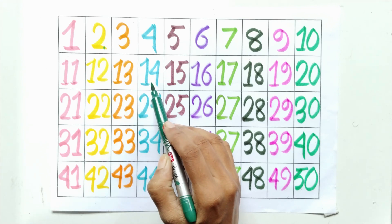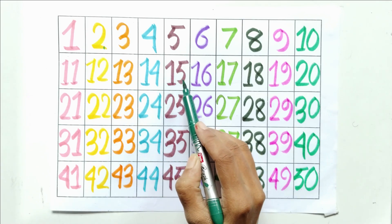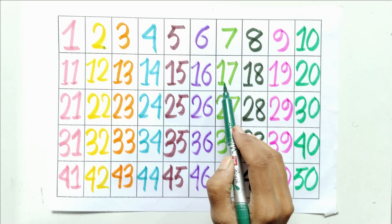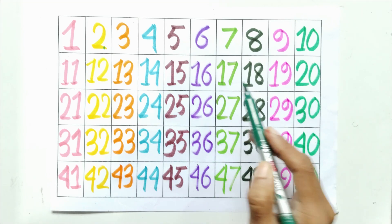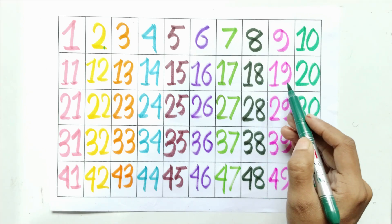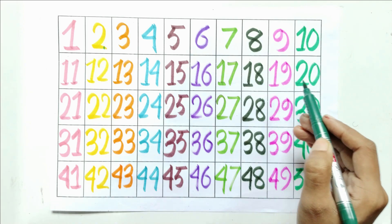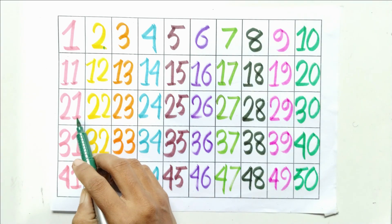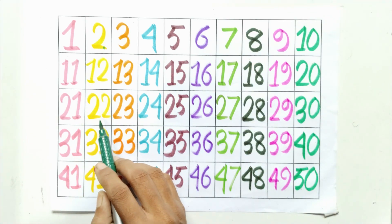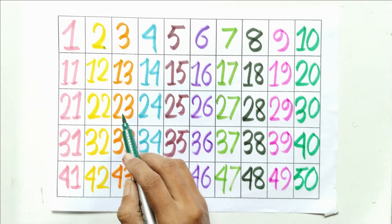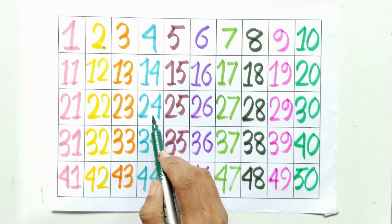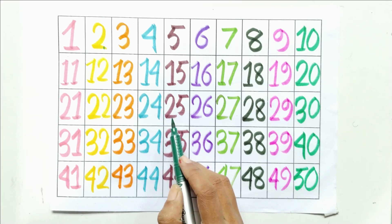Fourteen, fifteen, sixteen, seventeen, eighteen, nineteen, twenty, twenty-one, twenty-two, twenty-three.